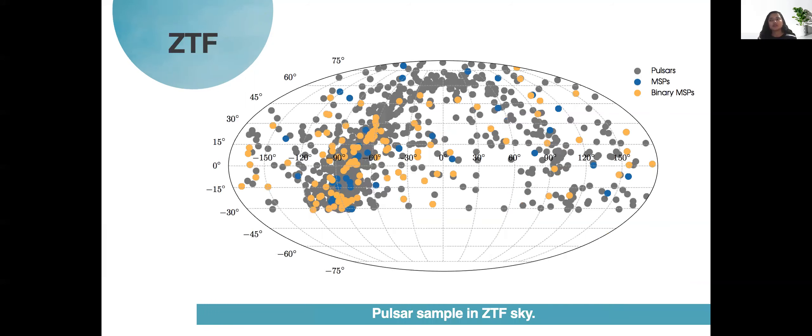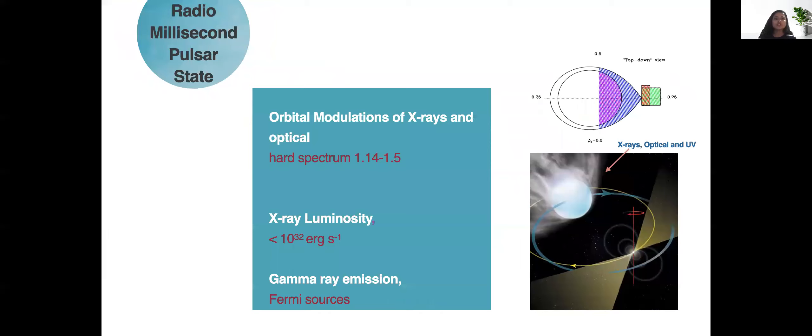This is where ZTF comes in. This is a Mollweide projection of ZTF observable pulsars so all the pulsars are depicted in gray, the millisecond pulsars are shown in blue and all these millisecond pulsars the ones that are in binaries are shown in yellow. A lot of them are observable and detectable by ZTF and the reason ZTF can detect millisecond pulsars with companion is because as we had said before if you do have a pulsar with a companion next to it the pulsar wind energetic pulsar wind would ram into this companion leading to an intra-binary shock.